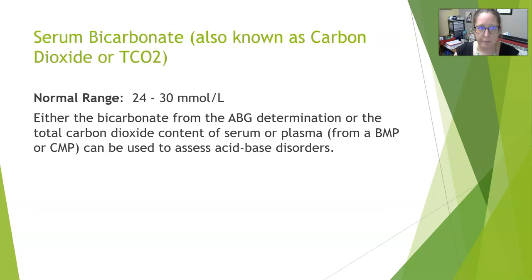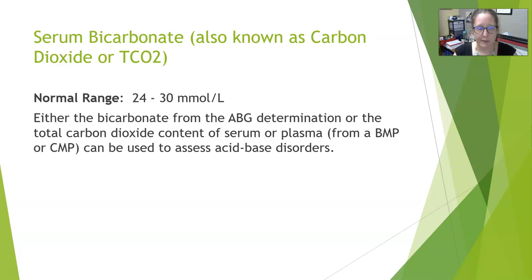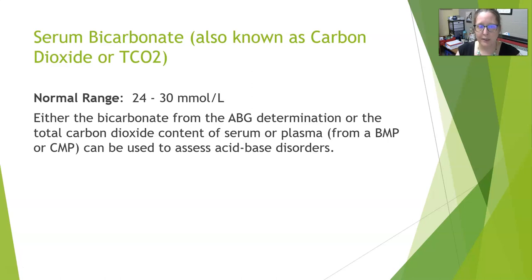Serum bicarbonate, also known as carbon dioxide or total CO2, is not the same as the partial pressure of CO2. The normal range for serum bicarb is 24 to 30 mmol/L. This value can be obtained as the bicarb reading on the ABG or as total carbon dioxide content listed on a basic or comprehensive metabolic panel. Most CO2 in the blood is transported as bicarb, which is why there is a close relationship between total CO2 and serum bicarb.